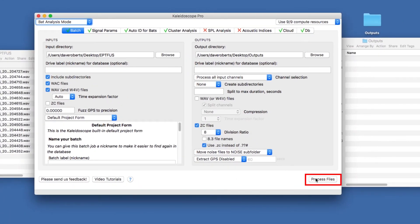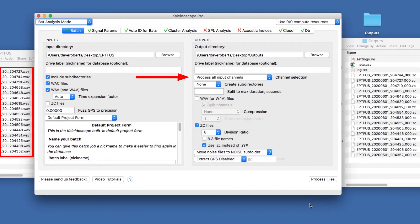Press the process files button. The selected wave files have now been recreated as zero crossing files.